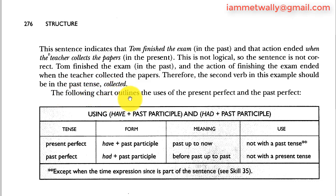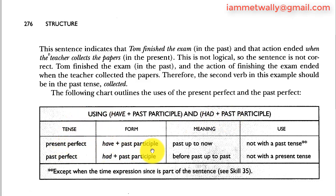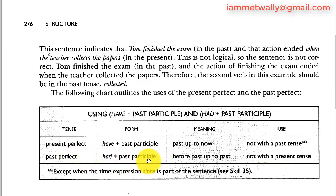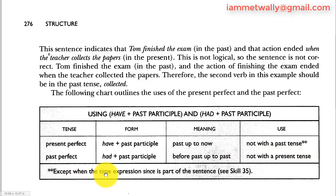The following chart outlines the uses of the present perfect and the past perfect. For the present perfect (have plus past participle), the meaning is 'the past up to now,' and the rule is: not used with past-only time expressions. For the past perfect (had plus past participle), the meaning is 'something in the past before another past action, up to the past,' and the rule is: not used with the present tense, except when the time expression 'since' is part of the sentence.